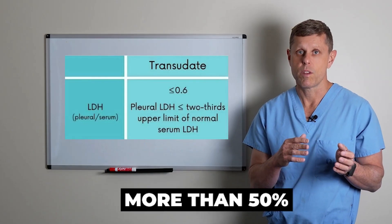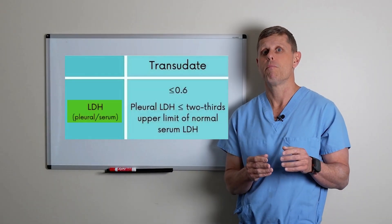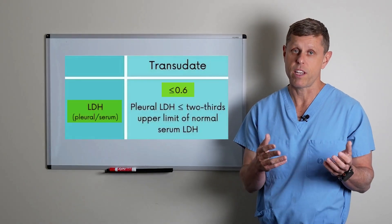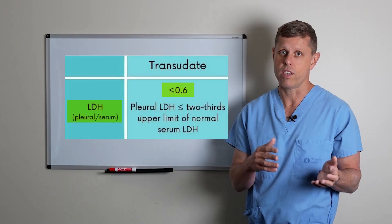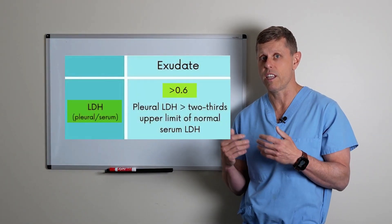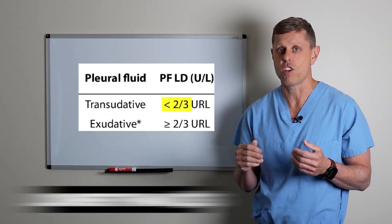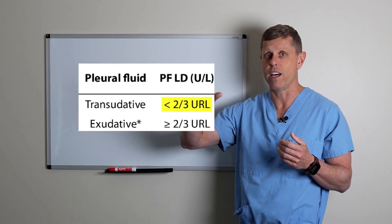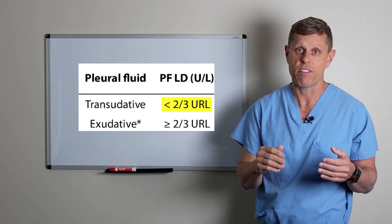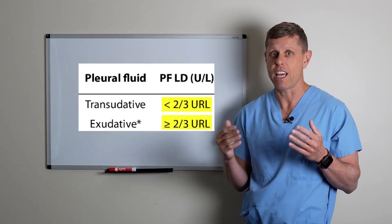The LDH is also a criteria. If the LDH in the fluid divided by the LDH in the blood is less than 0.6 or 60 percent, then this is considered a transudate. If it's higher than 0.6 or higher than 60 percent, then it's considered an exudate. Another criteria is if the LDH in the fluid is lower than two-thirds of the maximum normal value of the blood for that lab, then it indicates a transudate. But if it's more than two-thirds of the normal values, then it would indicate an exudate.